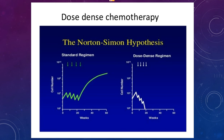Coming to another aspect: what should be the interval between two doses of chemotherapy? Frequently, patients come to us and say they'd like to delay the next dose by a week or 10 days — maybe there's a wedding in the family, an examination, or some other reason. Sometimes there is no reason at all and they simply want a larger interval of time between doses.